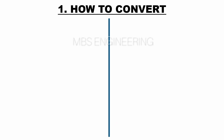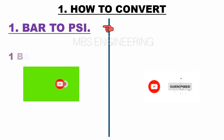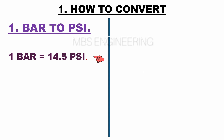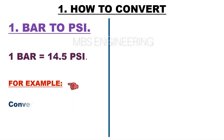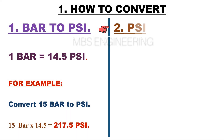Next, we will learn the first topic: how to convert bar to PSI. Please remember that one bar is equal to 14.5 PSI. Sample example: convert 15 bar to PSI. 15 bar multiplied by 14.5 — therefore the obtained pressure value is 217.5 PSI.